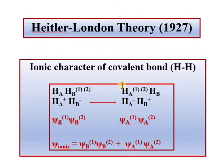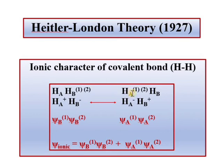अगला concept था ionic character of covalent bond। एक और concept उन्होंने दिया — ऐसा भी possible है कि दोनों electrons एक atom के पास आ जाएं। H_A का electron भी H_B के पास चला जाए, या H_B का electron H_A के पास चला जाए। अगर दोनों electrons H_B के पास आ गए, तो H_B पर negative charge और H_A पर positive charge आ जाएगा। इसी तरह H_A minus H_B plus भी एक situation होगी।